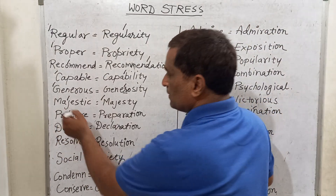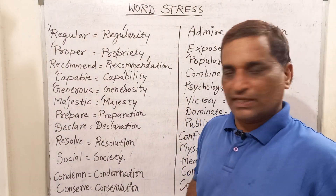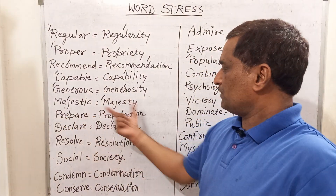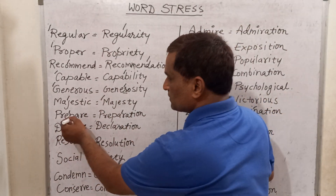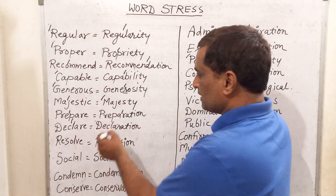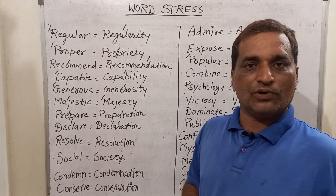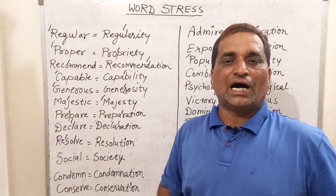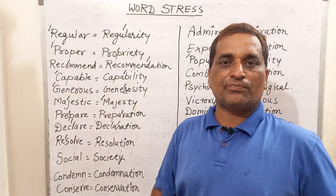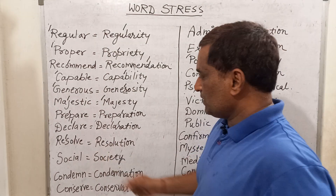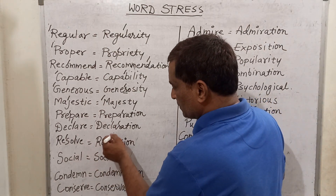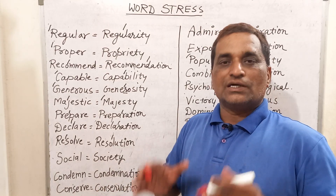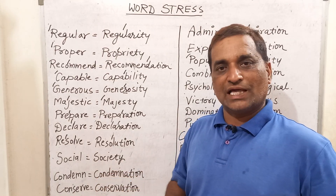For 'prepare', the stress will come before P, and for 'preparation', the stress will come before R: 'prepare', 'preparation'. For 'declare', the stress will come before L, and for 'declaration', the stress will come before R. Next is 'resolve', which means to make a resolution. I have resolved to avenge the murder of my brother. And for 'resolution', the stress will come before L. In that way, stresses are used with every word.